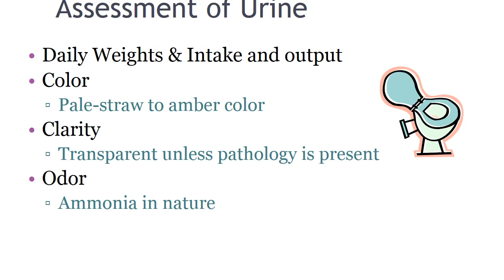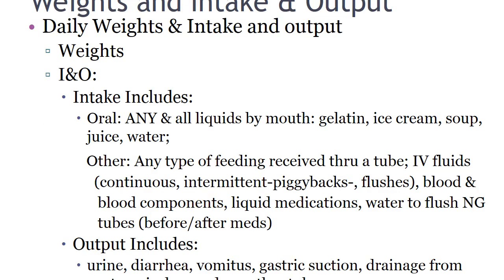In the lab, we will learn how to collect specimens. Different types of specimen collections include random, clean midstream, sterile, and timed. Daily weights are the single most important indicator of fluid status — for every kilogram of weight (2.2 pounds), that represents one liter of fluid retained or lost.